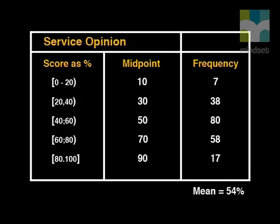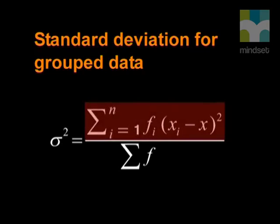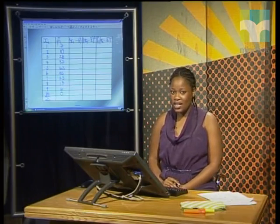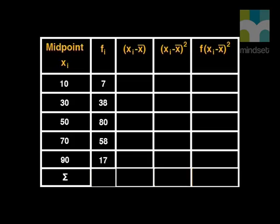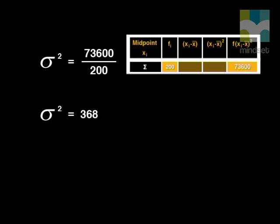Now that we've worked out the mean, let's calculate the standard deviation using the scores as percentages. Do you remember the standard deviation equation for grouped data? It tells us that the standard deviation squared is equal to the sum of the products of the frequencies with the squared differences between their respective values and the mean, divided by the sum of the frequencies. We will use a table to make finding the standard deviation easier. We'll work our way across the table from the first column through to the fifth, then sum the second and fifth columns. The standard deviation is the square root of the sum of the fifth column divided by the sum of the second. This gives a standard deviation of 19.18, which we round off to 19.2.